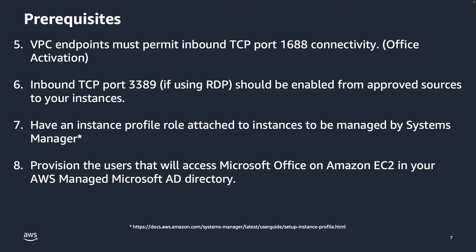You can also leverage Amazon Systems Manager and the Fleet Manager feature to connect to instances without opening TCP port 3389. Step seven: you must have an instance profile role attached to the EC2 instances to be managed by Systems Manager. Step eight: provision the users that will access Office on the EC2 instances in the AWS Managed Microsoft Active Directory.